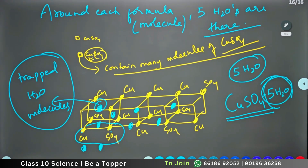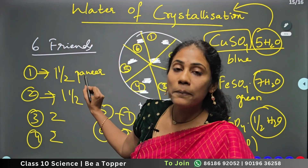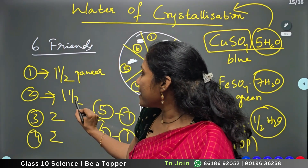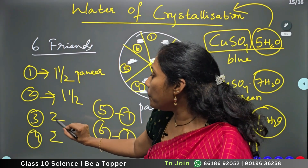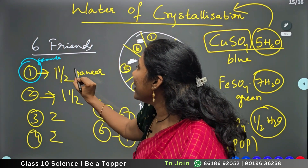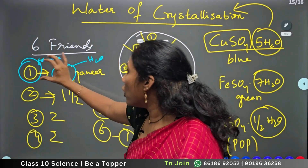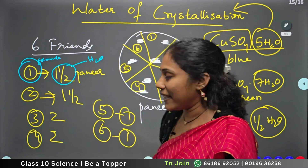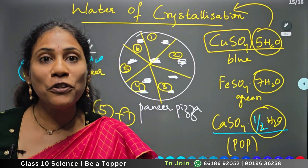Just like the pizza example: for the first person, one and a half paneer pieces; for the second, one and a half; the third person got two paneer pieces. Similarly, imagine this is one formula — and paneer pieces relate to the water molecules. Per one formula, it is like one and a half H2O's are there.